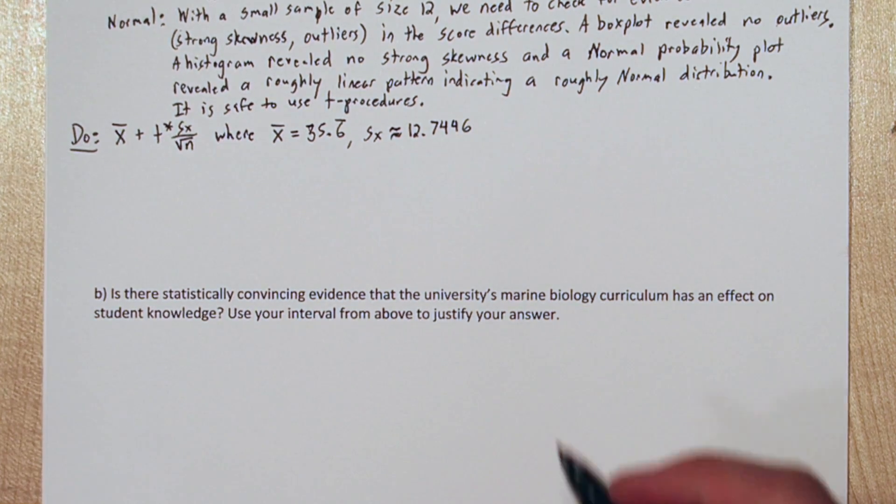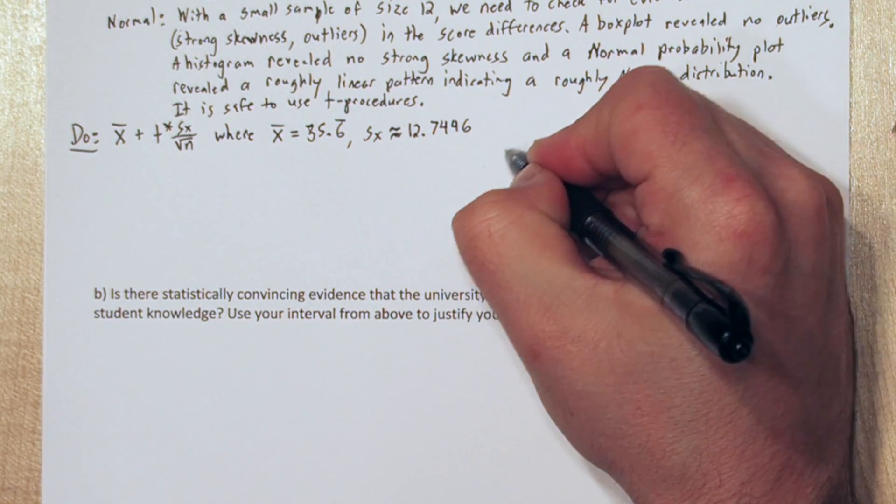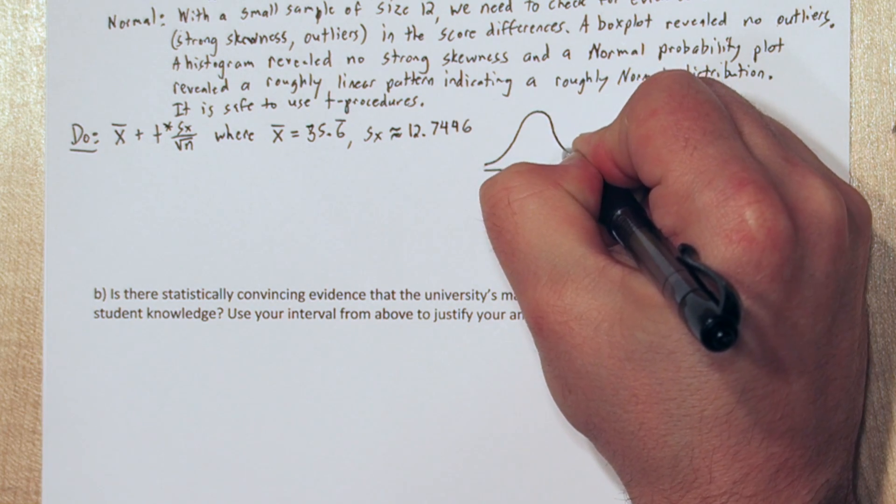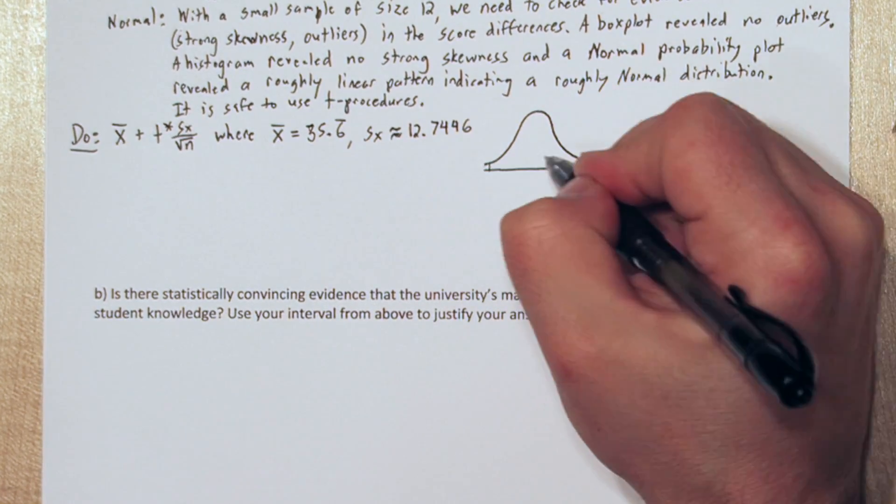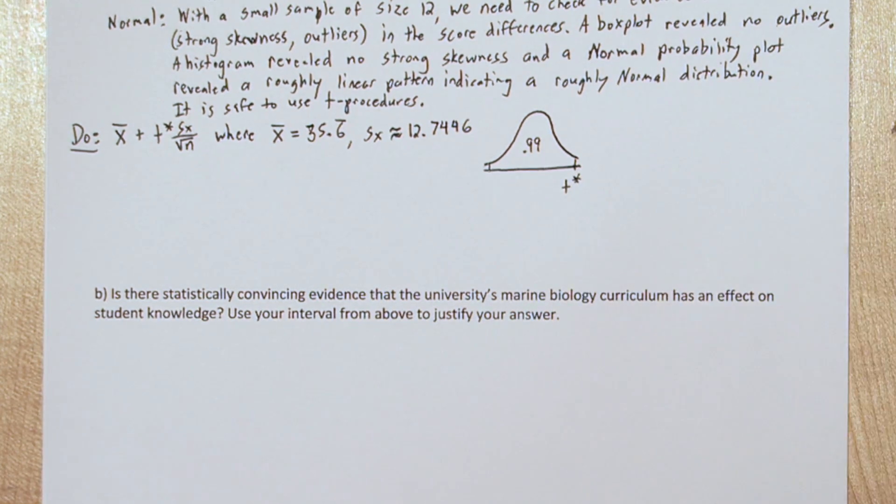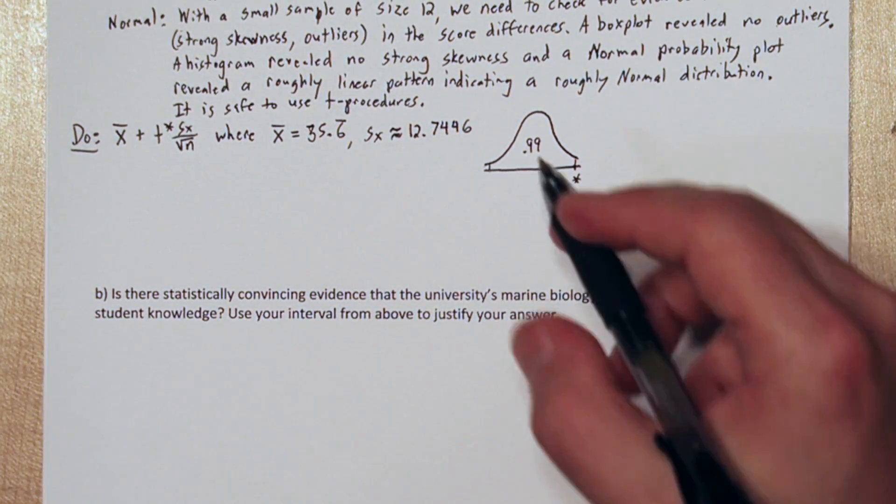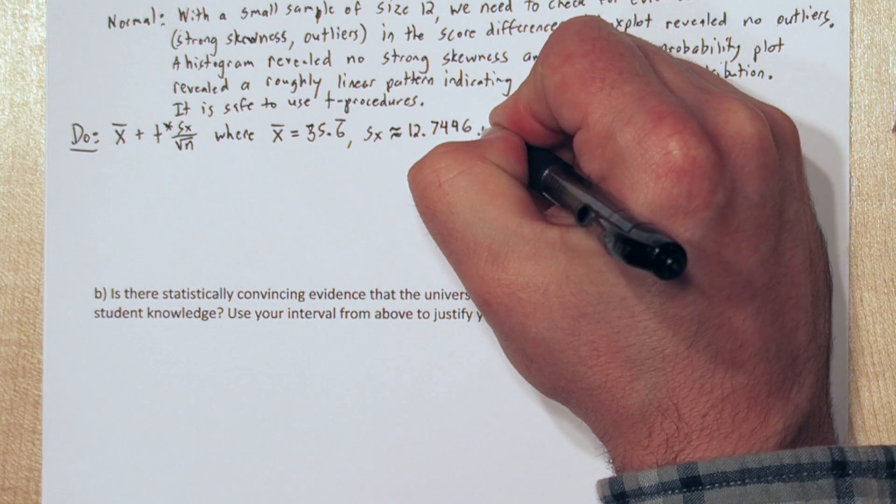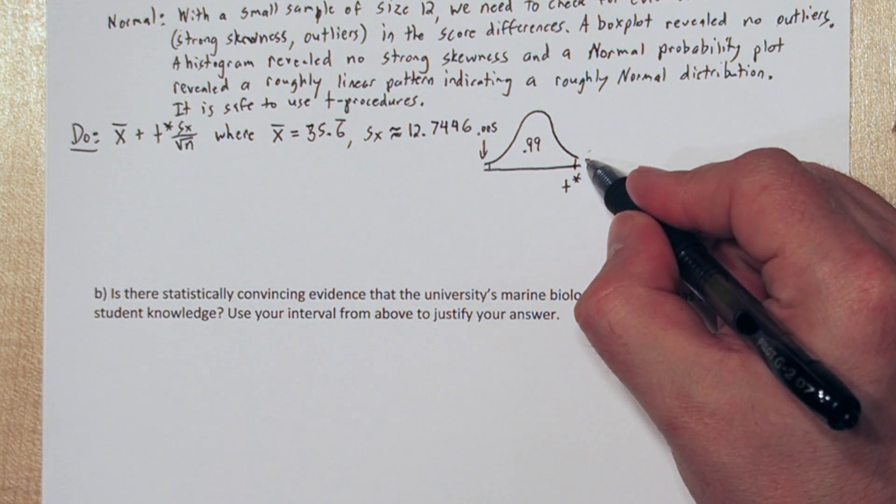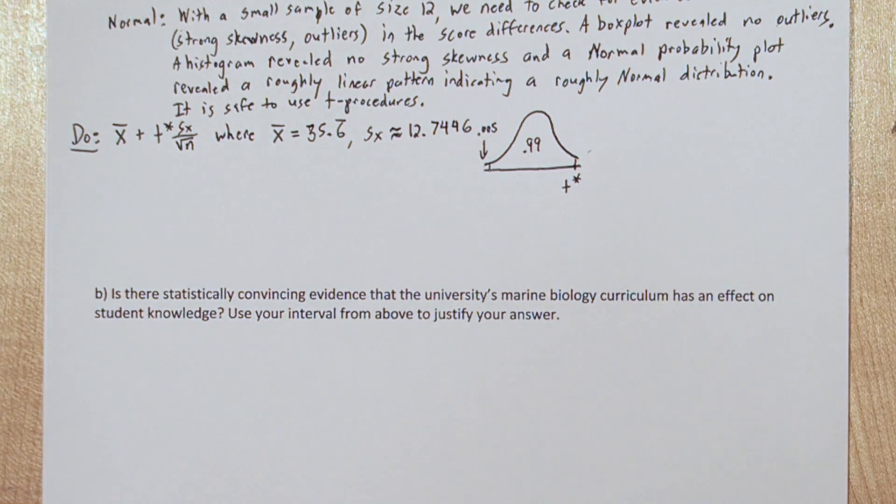Now we need t star, the critical value. Let's start by drawing a t distribution with 11 degrees freedom, which kind of looks like the normal distribution, but squashed a little bit, a lower peak and fatter tails. Alright, if the middle 99% of the data is right here, then that means this tail area on the left hand side is 0.005. Over here is also 0.005, so that the total adds up to 100%.